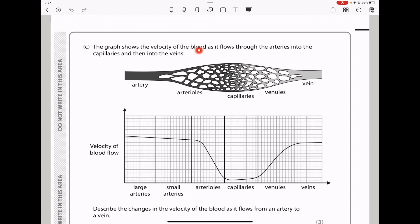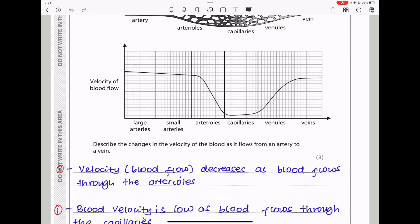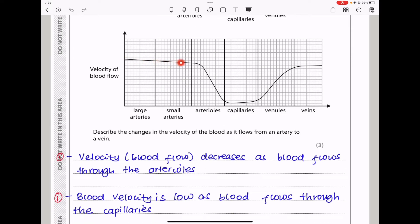Moving on. The graph shows the velocity of the blood as it flows through the arteries into the capillaries and then into the veins. The artery, arterioles, capillaries, venules, as well as veins. This graph shows us the velocity of blood flow as we move from large arteries all the way until the veins. They want us to describe the changes in the velocity of the blood as it flows from the artery to the vein. As blood flows from the larger arteries to the smaller arteries, we see there is a slight decrease in the velocity of blood. However, as it flows through the arterioles, there is greater decrease in the velocity of the blood, and through the capillaries, it's kind of maintained and then begins to increase in the venules.